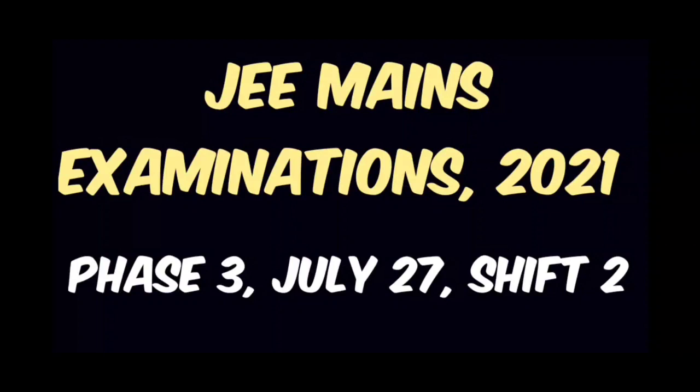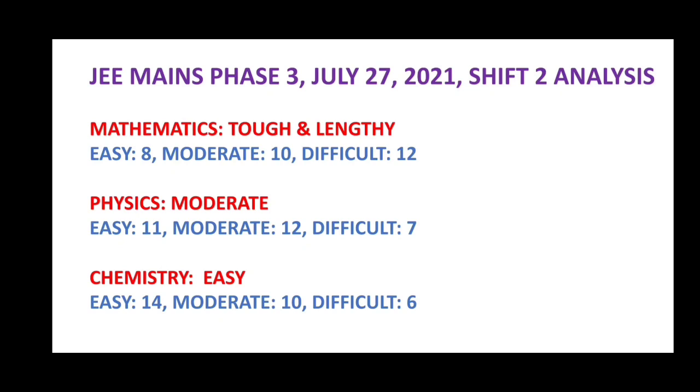Welcome back. Here is a brief analysis on JEE Mains examination 2021 Phase 3, July 27, Shift 2. This analysis includes the difficulty level of the question paper, expected cut-offs of marks and percentiles of various categories of students, and marks versus percentile analysis. A disclaimer: this analysis is purely based on the students who had taken the examination on 27th of July, Shift 2.